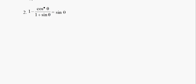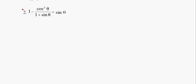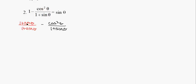So the more complicated side, again, is the left-hand side. I'm going to get a common denominator. I'm going to make this 1 here into (1 plus sine theta) over (1 plus sine theta). The rest of the problem stays the same: cosine squared theta all over (1 plus sine theta). So that I can add these two numerators, I get 1 plus sine theta minus cosine squared theta, all over (1 plus sine theta).